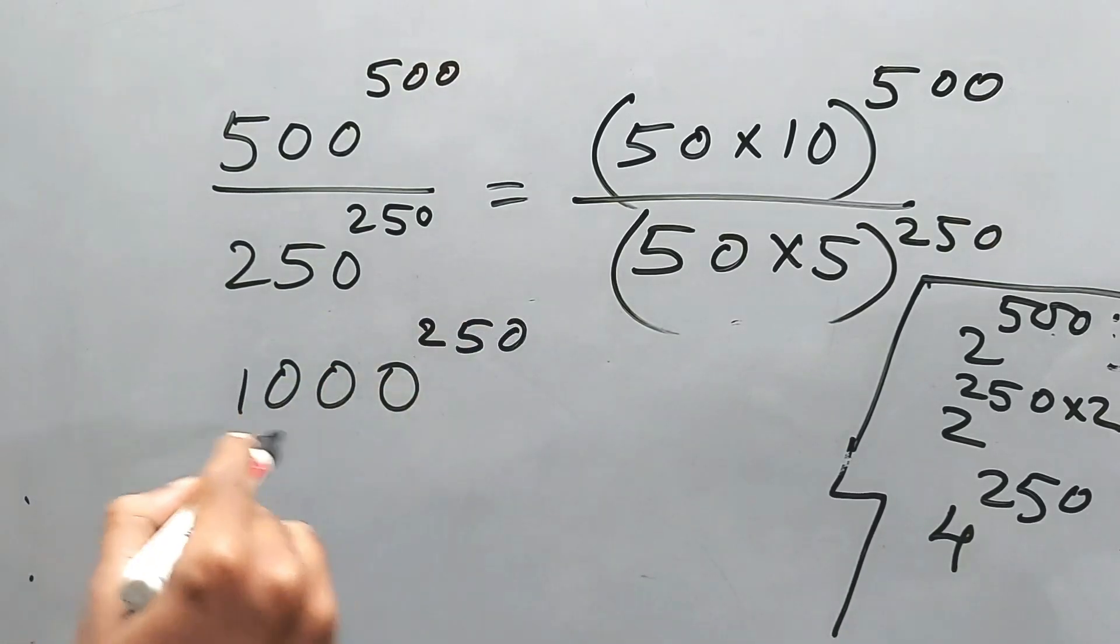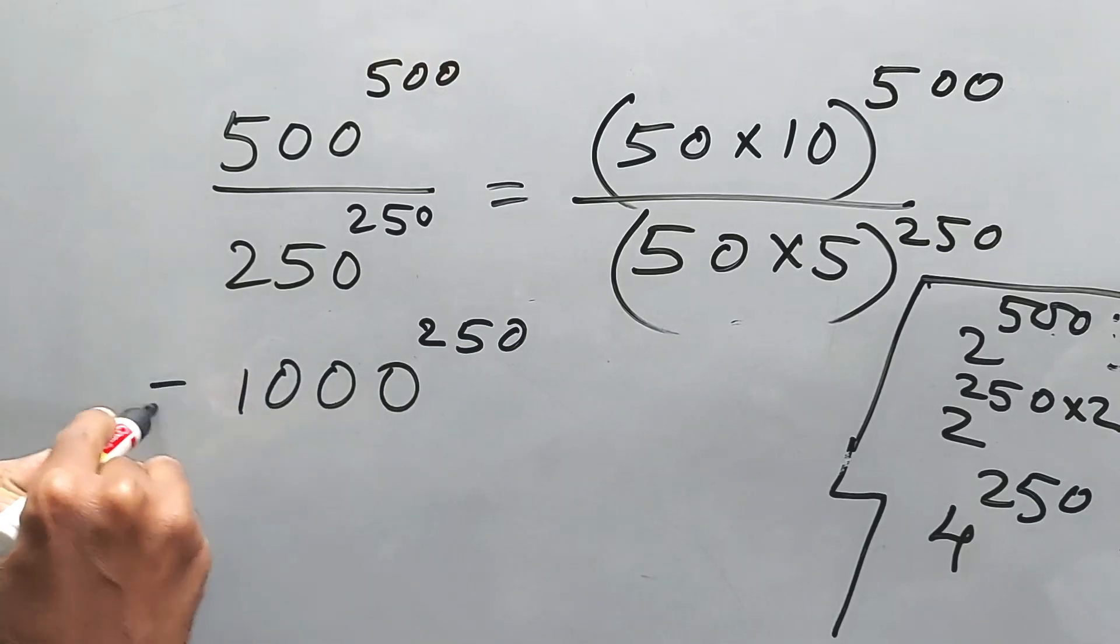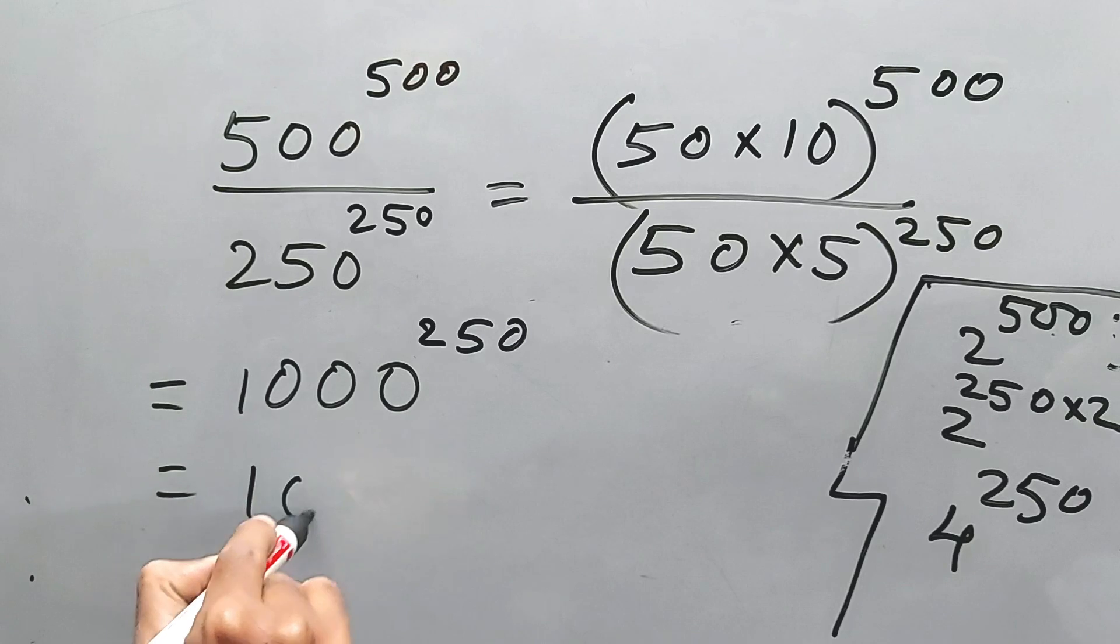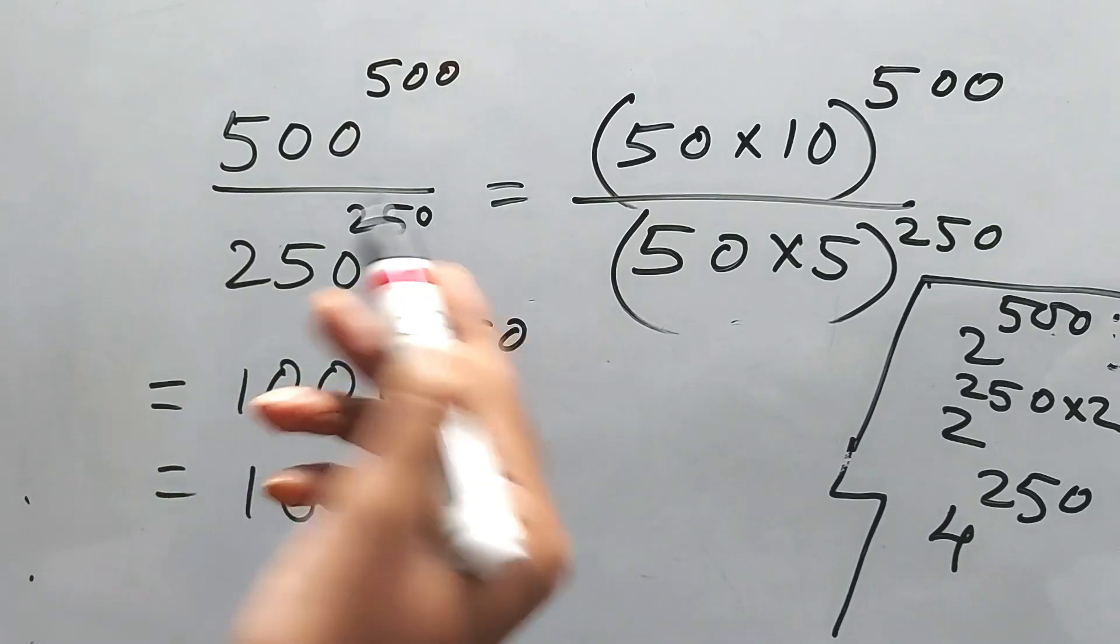Now 1000, we know this one is 10 cubed. Cube means 3, so 3 times 250 is 750. Therefore it's 10 to the power 750.